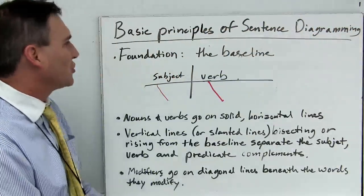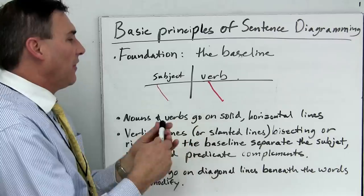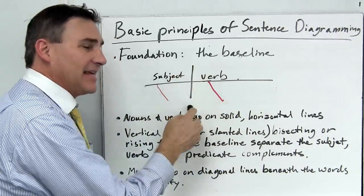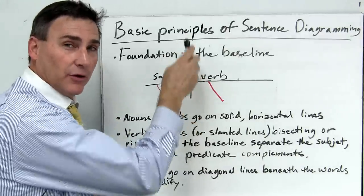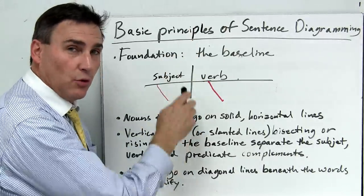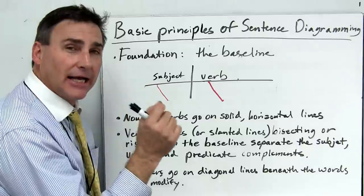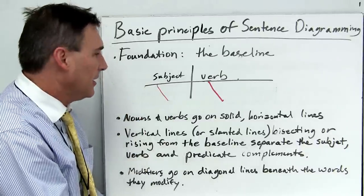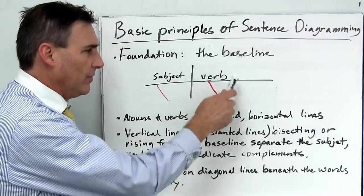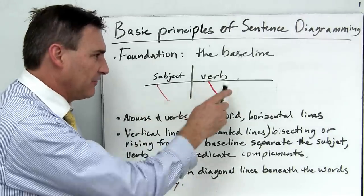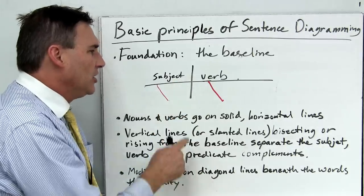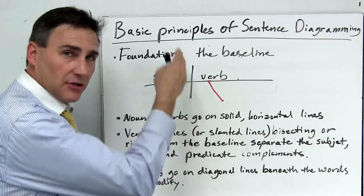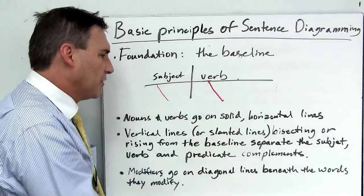Basic sentence diagramming starts with the foundation and that is the baseline. This is the baseline. And the bisector on the baseline, that vertical line that goes up and down through the horizontal line, separates the key components, the heart of any sentence, any clause for that matter, a subject and a verb. Subject to the left of the vertical line, the bisector that crosses it, and the verb to the right.